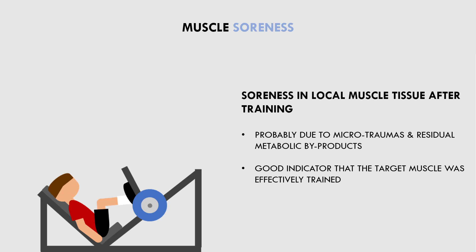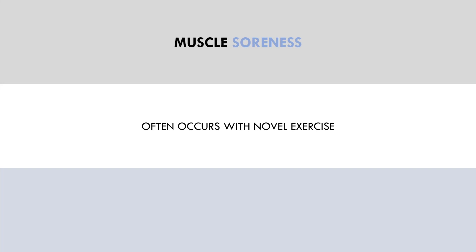Some muscles naturally experience more soreness than others, and this may also vary between trainees. Generally, muscles which are able to experience a high degree of stretch under load often experience the most soreness. For example, the hamstrings usually experience significant soreness in most trainees, while a muscle group like the delts may almost never get sore. We also need to be aware that muscle soreness is often exaggerated as a result of novel exercise, so if we change exercises in our program we are more likely to experience soreness. Therefore it is important to understand that soreness is one of many indicators — it is not something that we should actively chase.